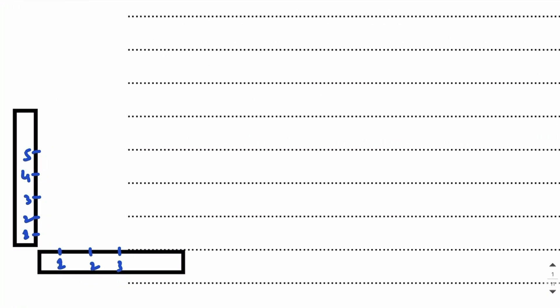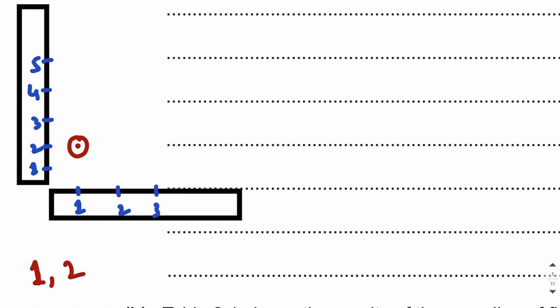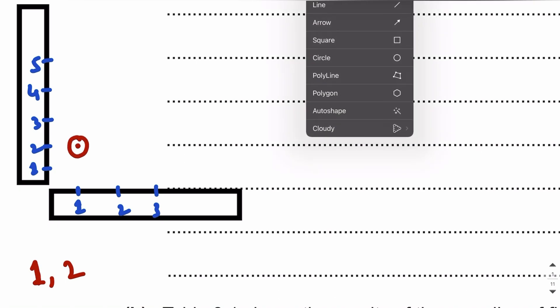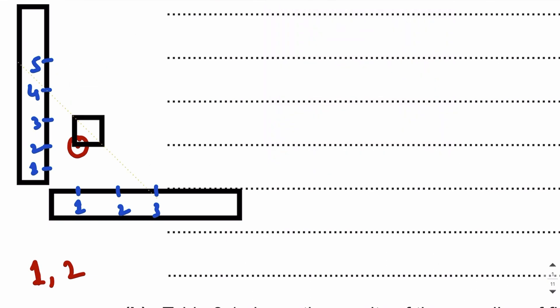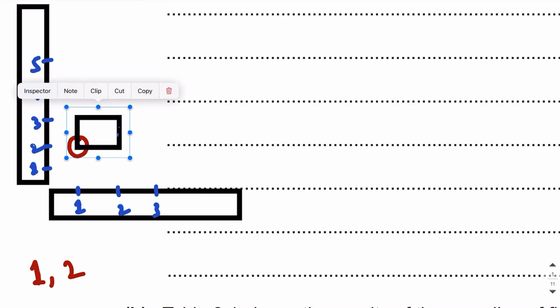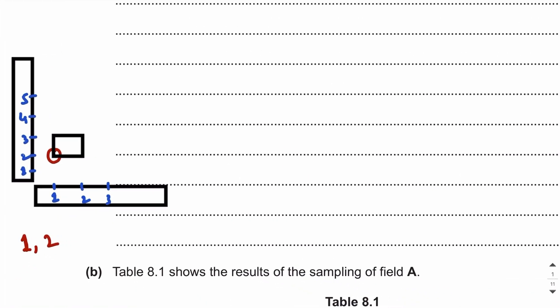After marking the area with measuring tapes, we use a random number generator application or device to find the coordinates. For example, the random number generator gives me coordinate (1,2), so at that point I will place a square frame quadrat of one meter by one meter, or 100 cm by 100 cm. When we place the quadrat, we count the number of individuals of a particular plant species in it to find species frequency. If we cannot count individuals, we find the percentage cover using a grid quadrat.